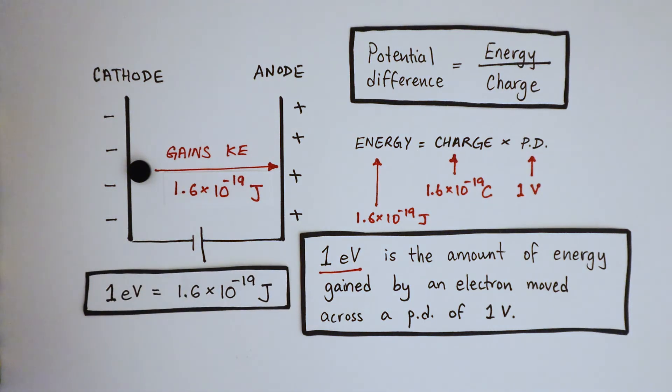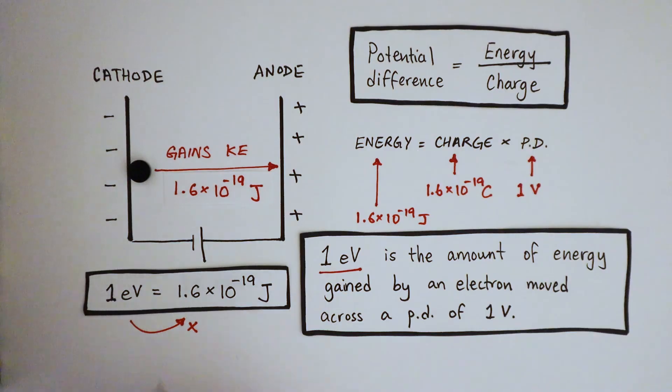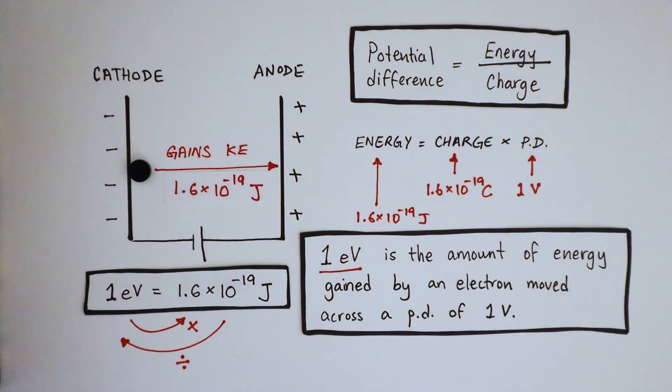1 electron-volt is equal to 1.6 times 10 to the minus 19 joules. To convert from electron-volts into joules, you multiply by 1.6 times 10 to the minus 19. And you do the opposite if you want to convert joules into electron-volts: you divide by 1.6 times 10 to the minus 19.